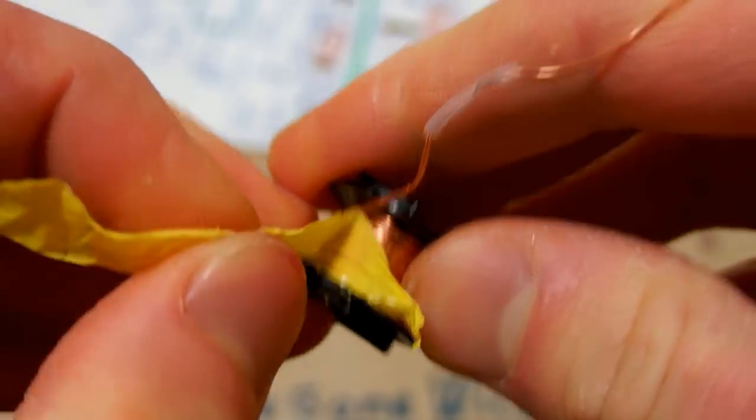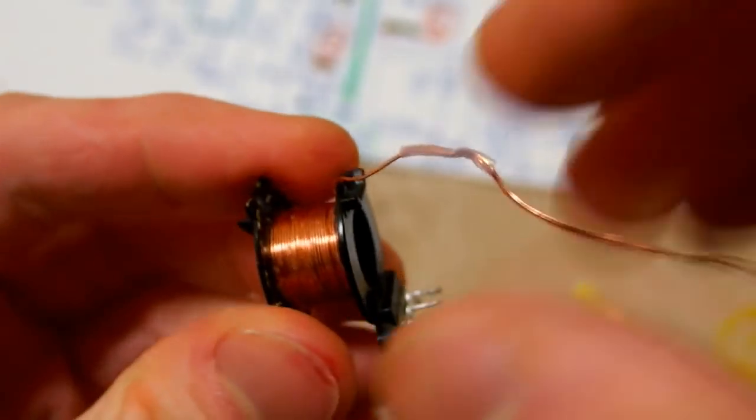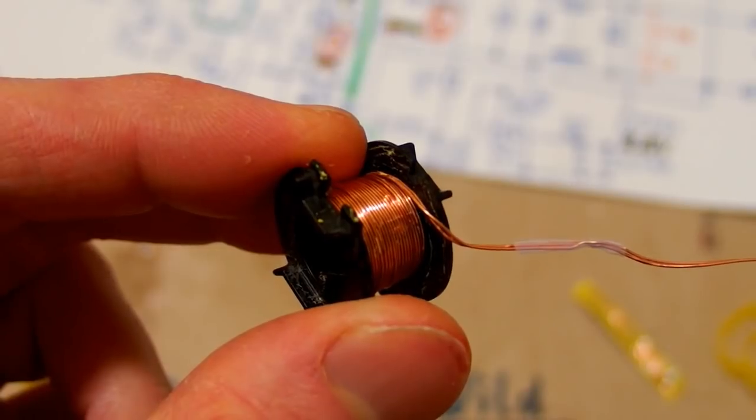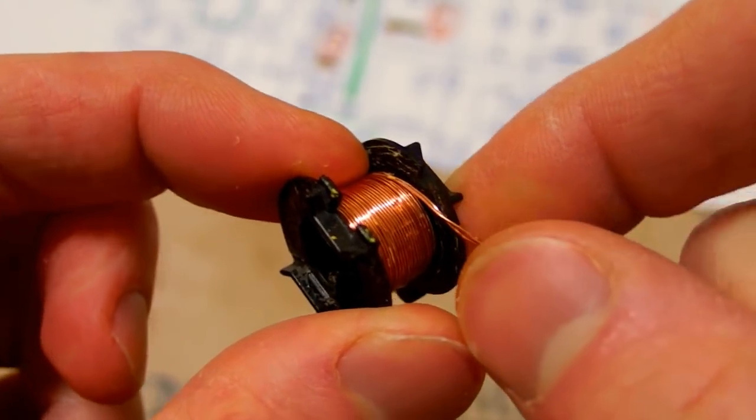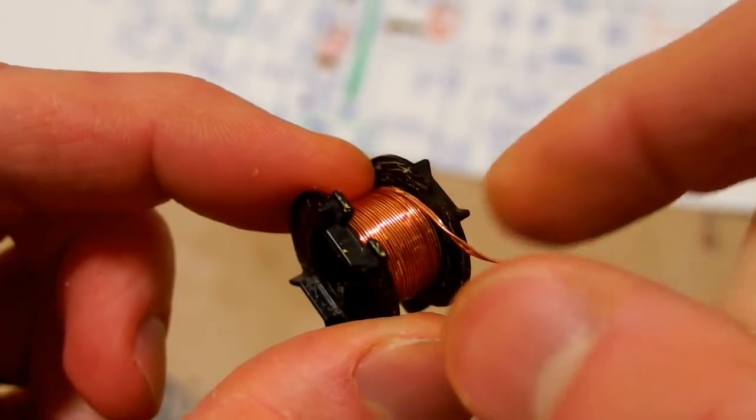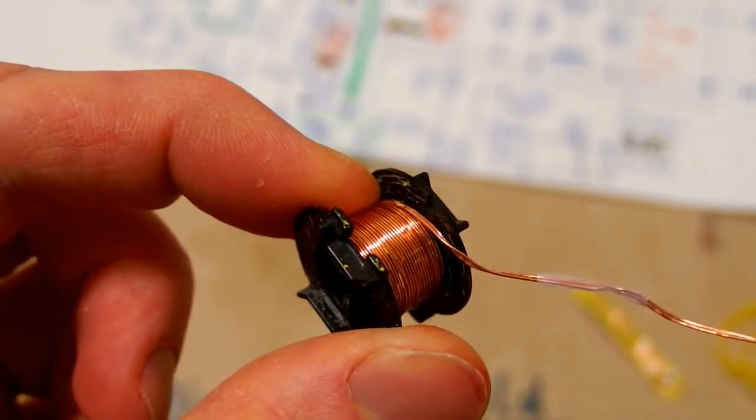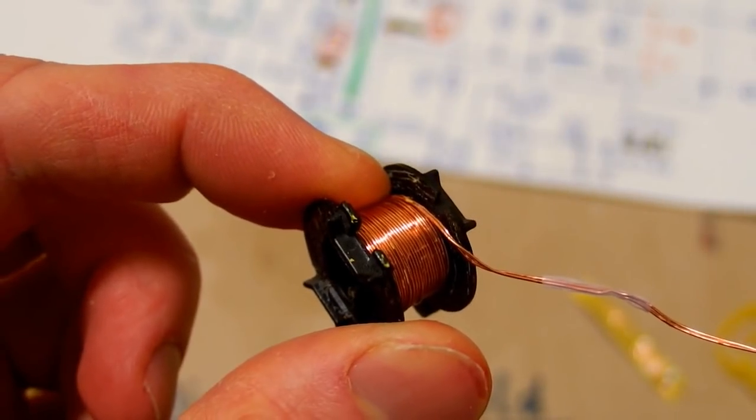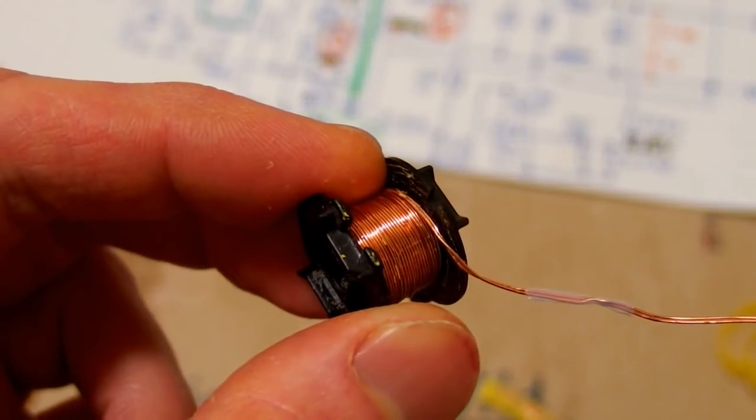And here you can see the rest of the primary. The primary is split into two sections for better coupling with the secondary. One section is under the secondary and the other section is above it.